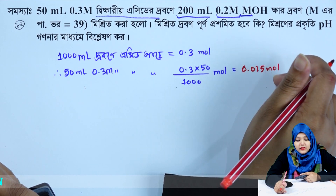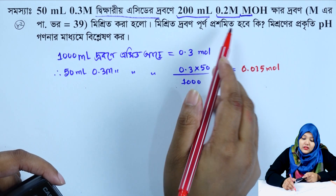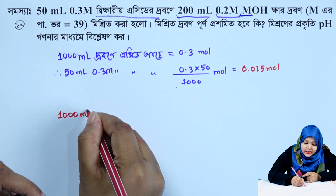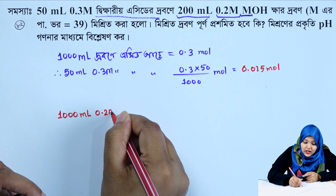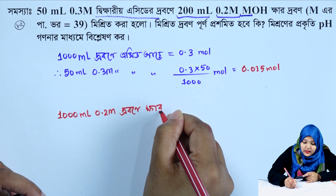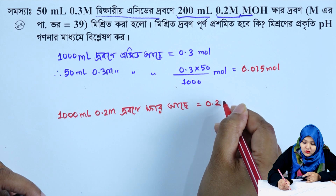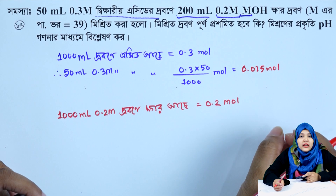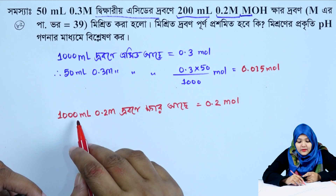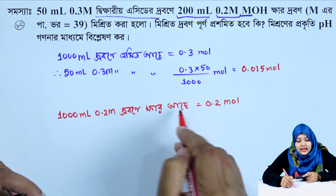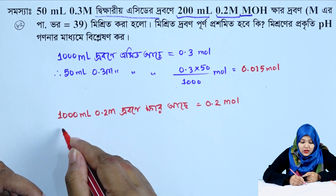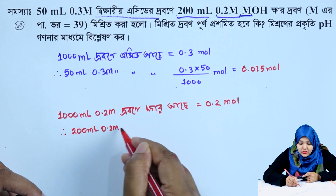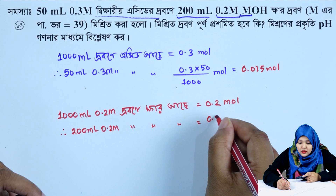Now for the base: 0.2 mol/L concentration means 1 liter has 0.2 mol. So for 200 mL of 0.2 mol/L KOH solution, the moles of base = 0.2 × 200/1000 = 0.04 mol.